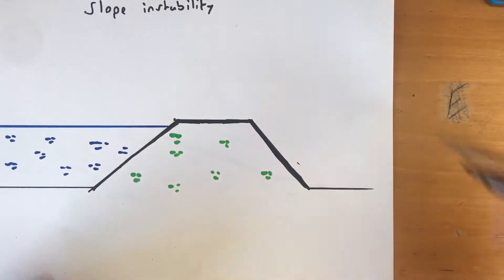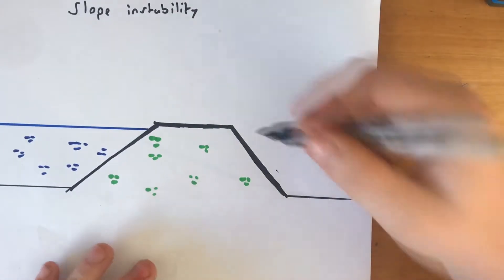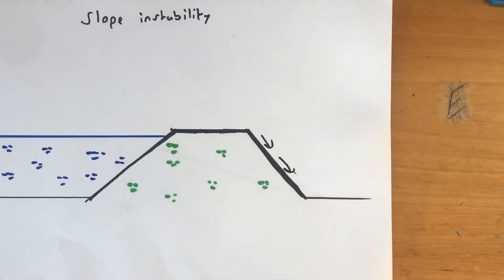Slope stability. If the slope on the downstream or upstream side is too severe, this can cause a failure of the face of the dam and cause an overall failure of the dam itself.